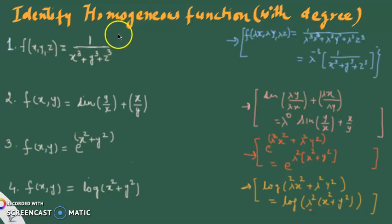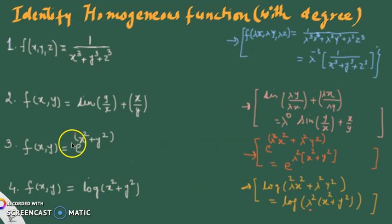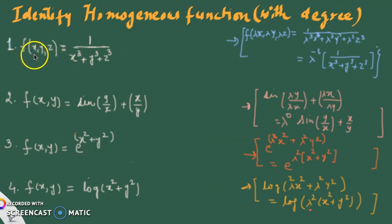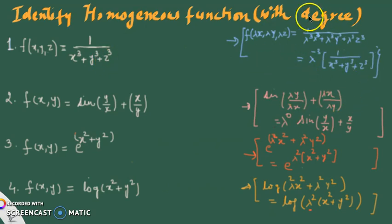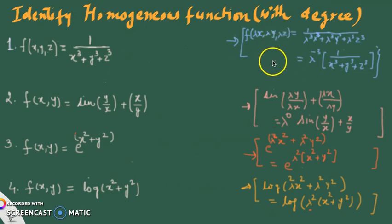Hello all. In continuation to my previous lecture on homogeneous functions, I want to give some more examples using different functions so that the concept becomes clearer in identifying whether a function is homogeneous or not. I want you all to understand how, without applying any one of the three forms, we can see whether it is a homogeneous function or not.